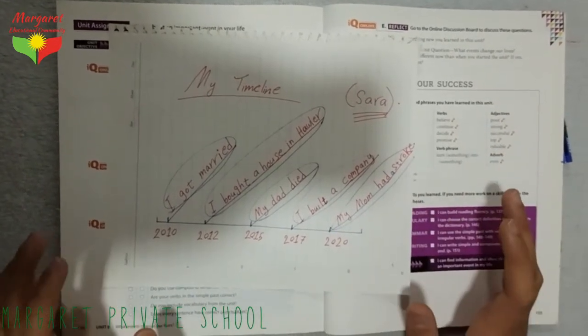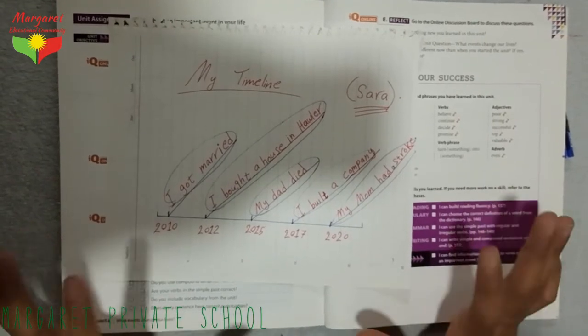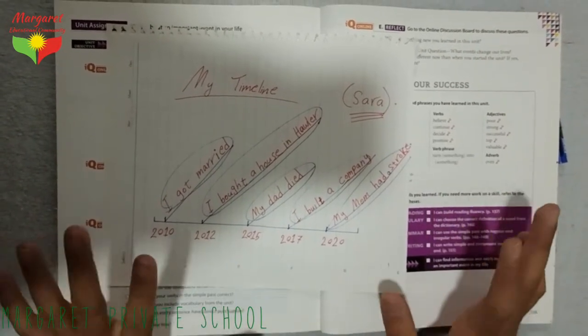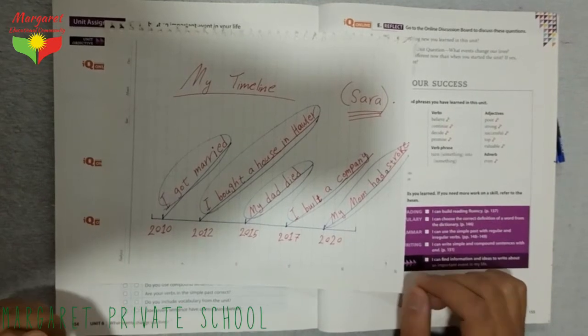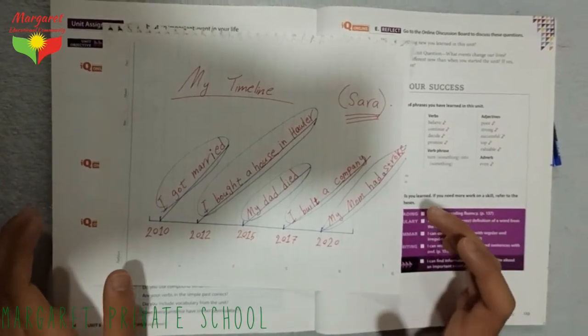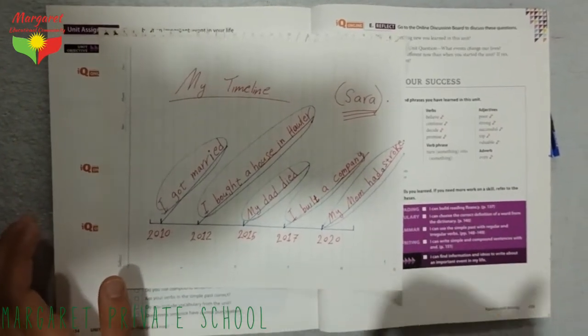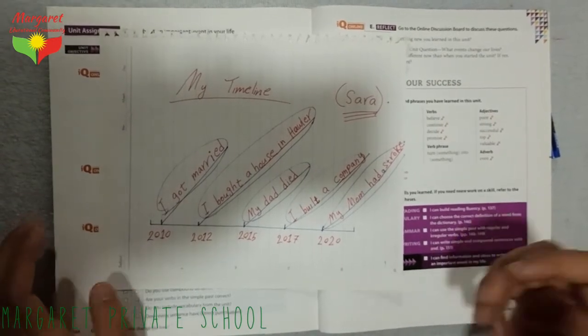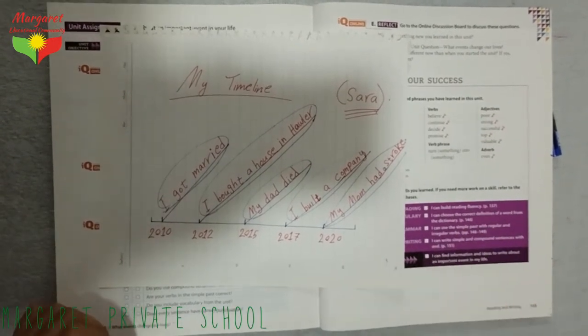When you have a stroke, you can check this in dictionaries. When you have a stroke, that means that is a sudden attack on one of the organs of your body. That is a sudden attack, sudden health condition on one of the organs of your body. Especially heart and sometimes brain, brain stroke or heart stroke.